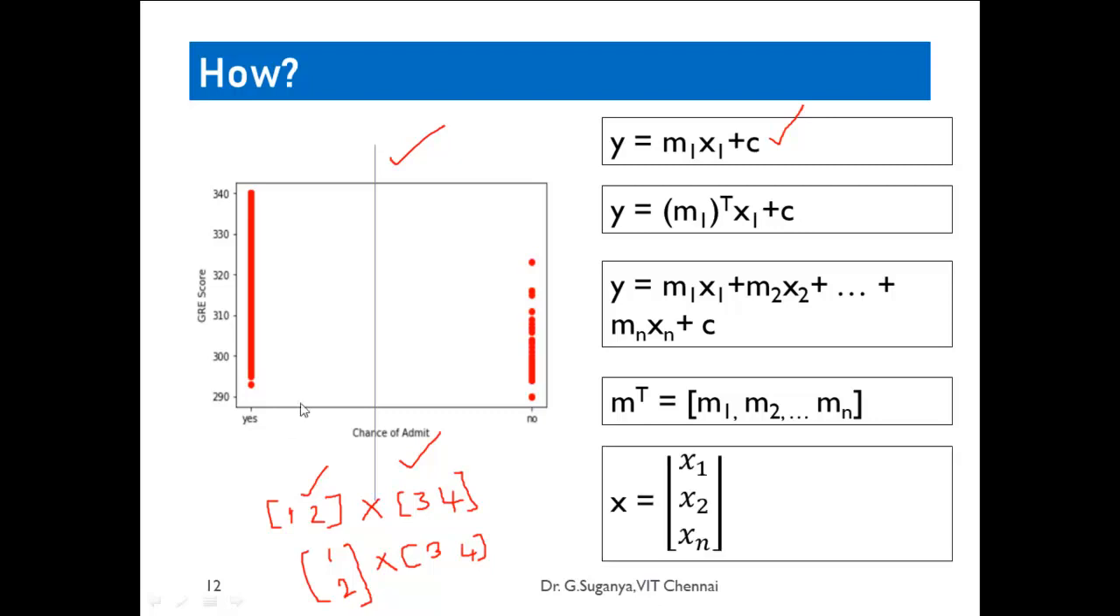If you have more than one input variable, the equation goes like m1x1, m2x2, and so on. All the m values will be taken, and a transpose obtained. You will have an n by 1 matrix. Having done this, you will arrive at an equation and can predict the value of y.